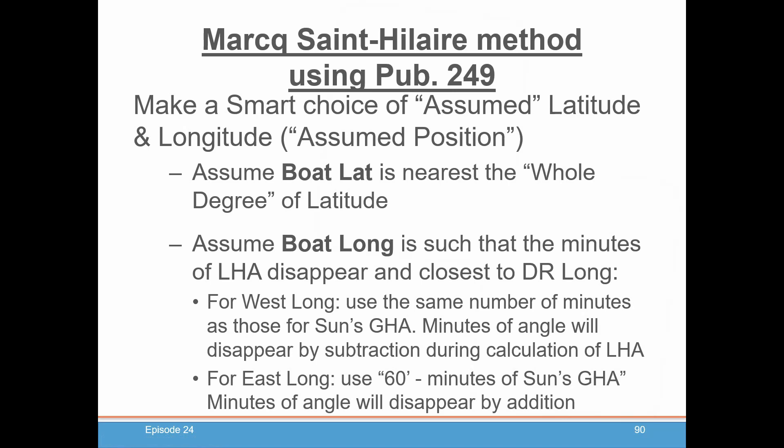The next thing you have to do, and this is probably the more crucial point, is assume a boat longitude such that the minutes of local hour angle — LHA — disappear, are zero, and is closest to your DR longitude. If you're in west longitude, you will use the same number of minutes as those for the sun's GHA or whatever celestial body we're using. When you calculate LHA for a west longitude, you subtract your longitude from the GHA, and because the minutes are the same, the minutes will turn out to be zero in LHA for this assumed position.